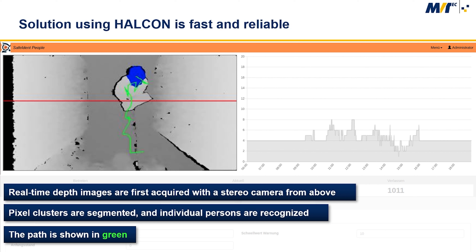In the system developed by Strelin, Halkan is used to detect and isolate persons in a depth image. For this purpose, real-time depth images are first acquired with a stereo camera from above, which you can see here. After some pre-processing, interconnected height profiles are identified and analyzed.